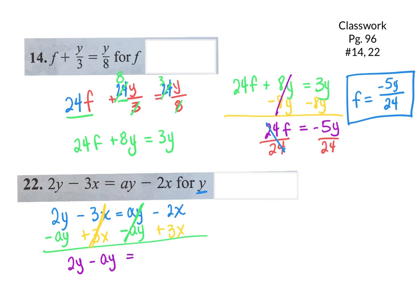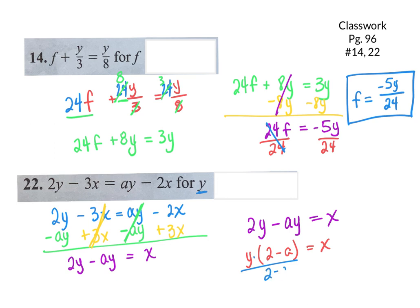I can't combine 2Y and AY — 2 and A cannot combine. On the left-hand side, however, I have negative 2X and positive 3X, which gives me just X. Here is where I use my distribution property: there is a Y in both terms on the right, so Y can be on the outside multiplying what's left, (2 minus A). Then I can divide by the entire group (2 minus A) — it cancels on the right and I'm left with just Y. On the left, I have X over (2 minus A).